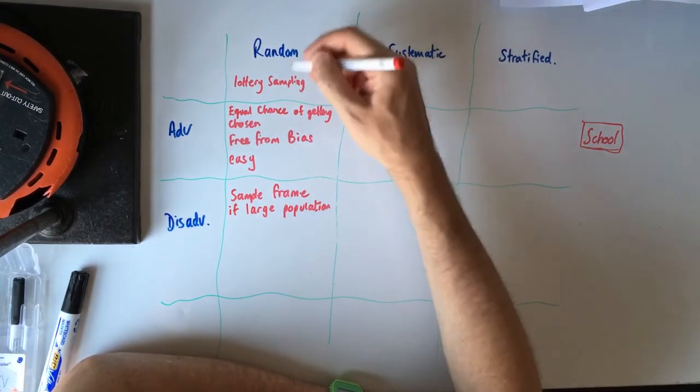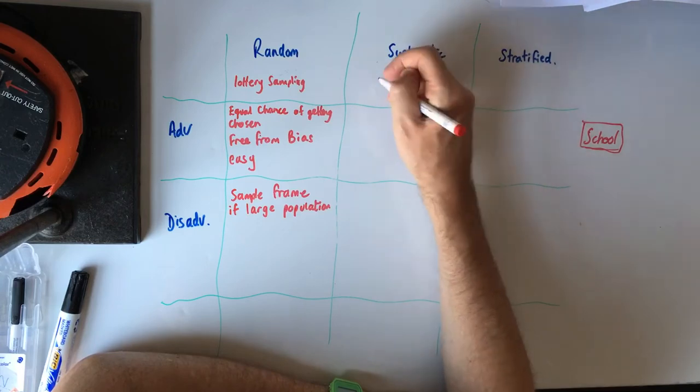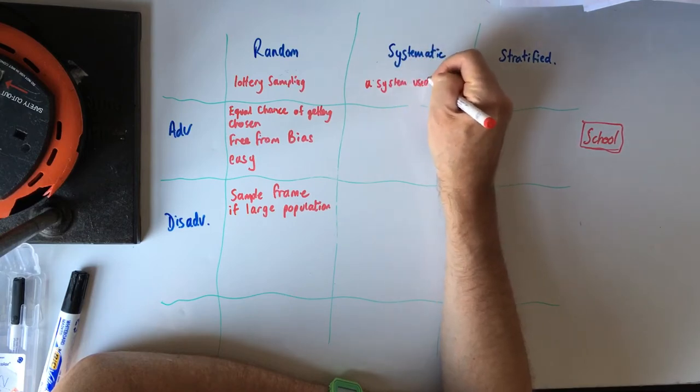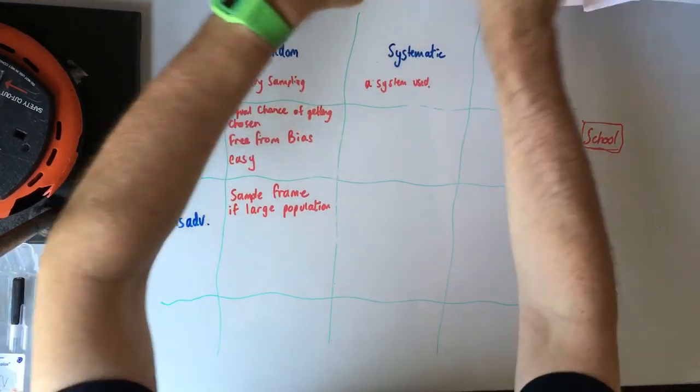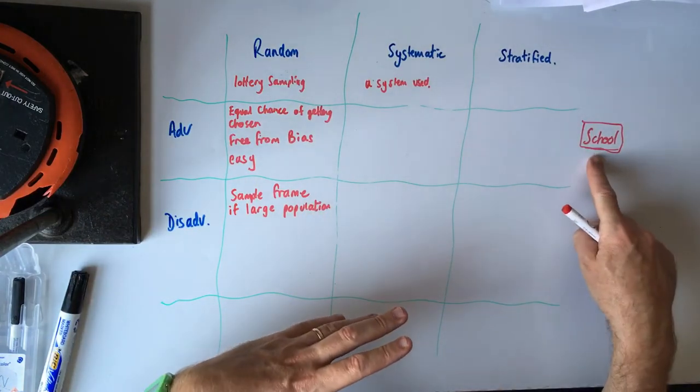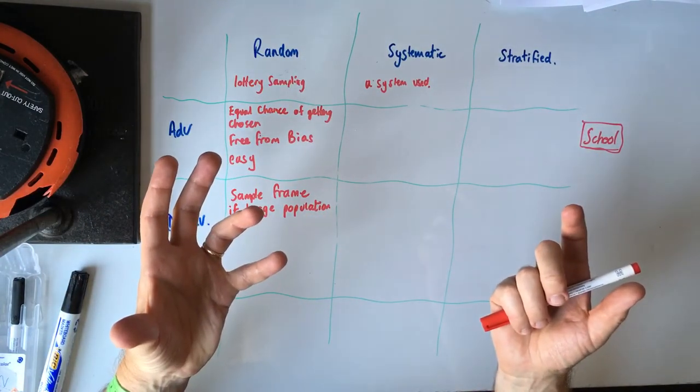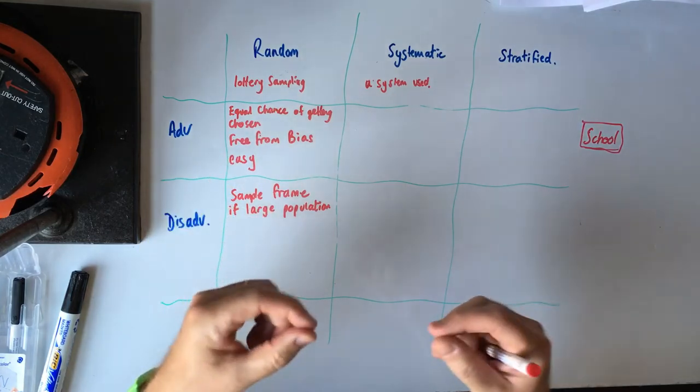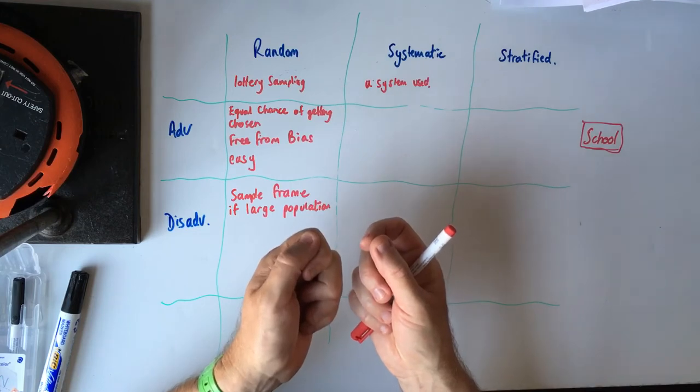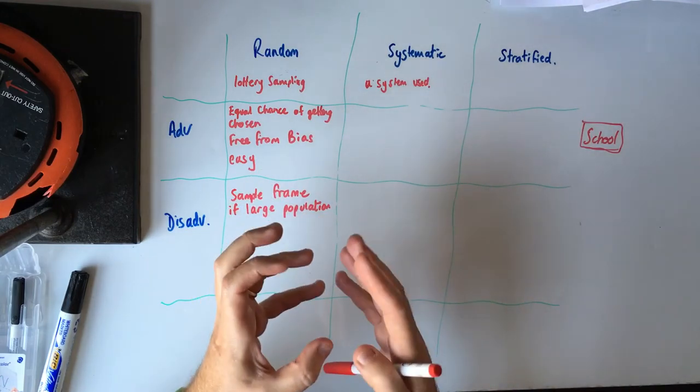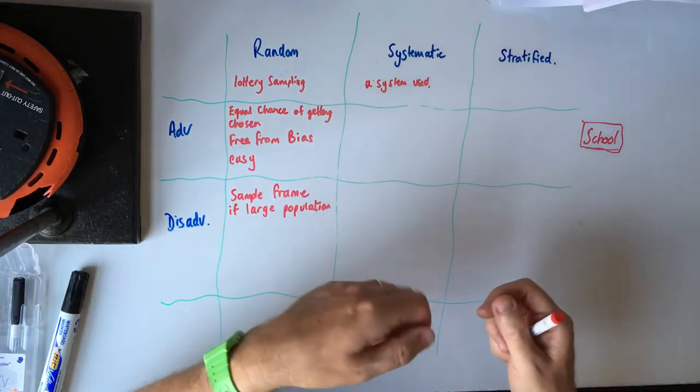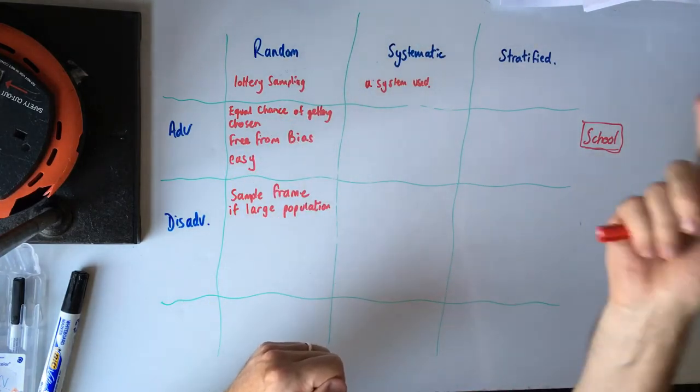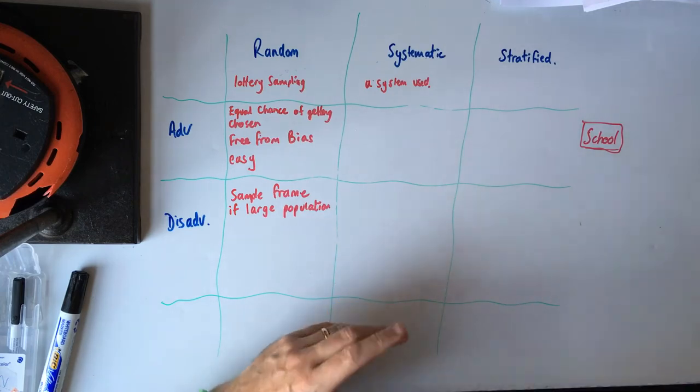Systematic sampling is really, is like random sampling but it's a system used. And again, what are the other? So that would be, you still have to randomly set, so say you've got your population as your school, you randomly choose a person from that school. And then after you've got that first one that's randomly chosen, you take every 10th person after that. So if you randomly choose ticket number 37, you go, right, 37, I'm going to get 47, 57, 67, 77 and you use a system after that.